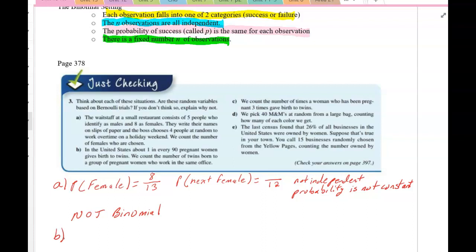And there is a fixed number of observations because we're talking about the women in the same office. So there may be 10, there may be 12. We're not sure how many women there are, but there is a fixed number. So letter B is binomial.